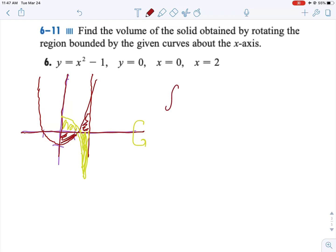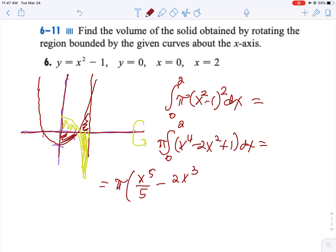So it ends up just being the volume from 0 to 2 of pi times x squared minus 1 squared dx. And so we end up getting, you want to actually physically square that. FOIL, however you want to think about it, you get x to the 4th minus 2x squared plus 1. We can just take now the general antiderivative which is x to the 5th over 5 minus 2x cubed over 3 plus x.